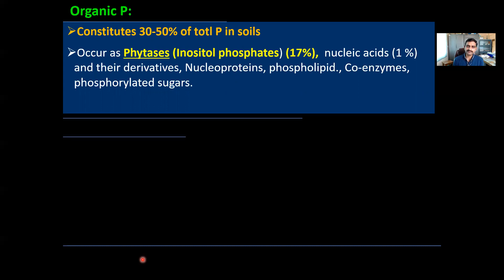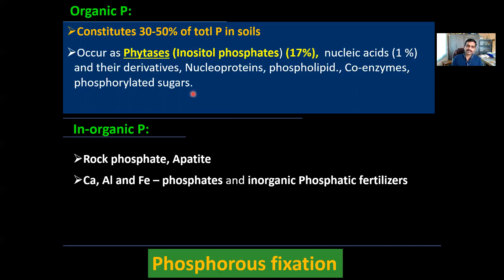Among the organic sources of phosphorus, phosphorus occurs in the form of phytases, also called inositol phosphate. Inositol phosphate or phytases constitute 17 percent of the total organic phosphorus present in the soil. Apart from these, nucleic acids and their derivatives constitute one percent of the organic form of phosphorus. Other organic forms of phosphorus in soil include nucleoproteins, phospholipids, coenzymes, and phosphorylated sugars. The inorganic form of phosphorus includes rock phosphate present in rocks, which is also a non-available form of phosphorus, as well as calcium phosphate, aluminum phosphate, and iron phosphate.